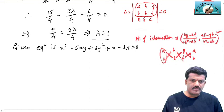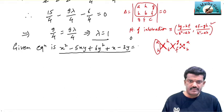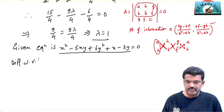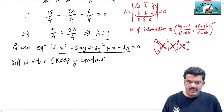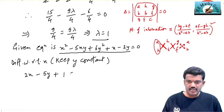We will differentiate the given equation with respect to x, keeping y constant. Differentiating: derivative of x² is 2x, then −5y × 1 (y constant), plus 6y² gives 0, plus derivative of x is 1, and −3y gives 0. So the first equation is: 2x − 5y + 1 = 0.